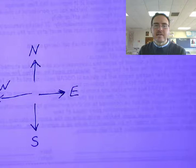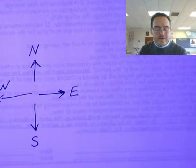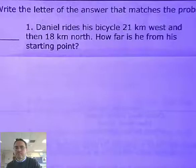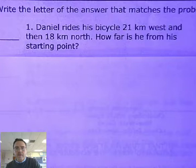So if a problem says 'Bob walks 20 miles to the east,' they mean to go right; south is down, west is left, and up is north. Now let's get into the problems. The first one requested was problem number one: Daniel rides his bicycle 21 kilometers west and then 18 kilometers north — how far is he from his starting point?